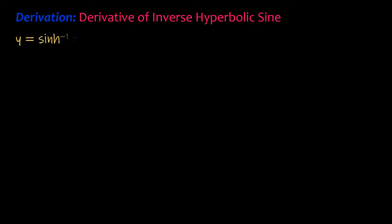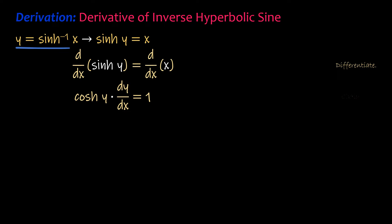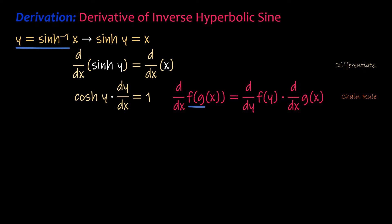Derivation of the derivative of the inverse hyperbolic sine function. Let y equal the inverse hyperbolic sine of x, which means that the hyperbolic sine of y is equal to x. Take the derivative with respect to x of each side of the equation. The derivative of the hyperbolic sine of y is hyperbolic cosine of y. However, because y is a function of x and we need its derivative with respect to x, multiply the result by the derivative of y with respect to x. This differentiation process is called the chain rule, and it is applied in differentiating composite functions.